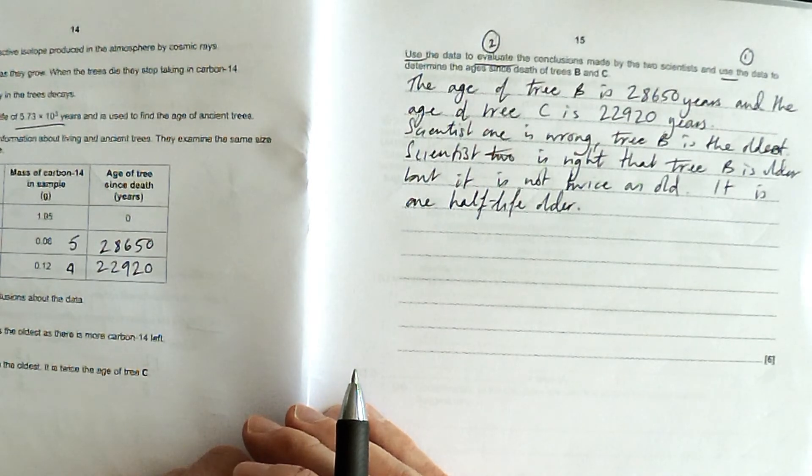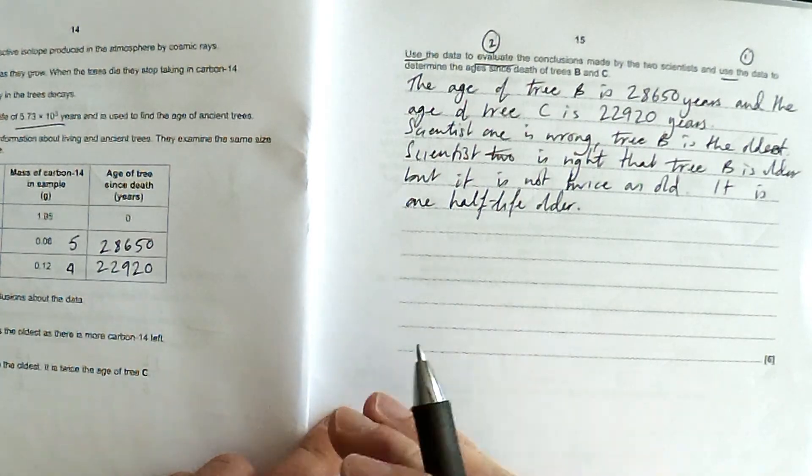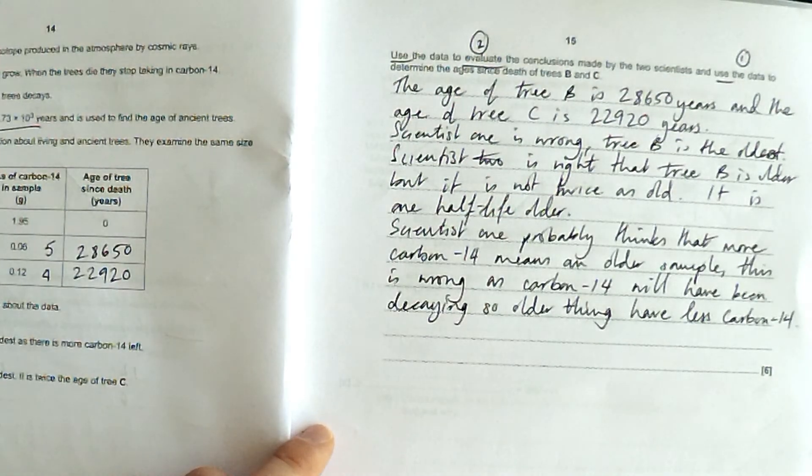It's not twice as old. It's one half-life older. Now why? What's the mix-up they've actually made? Let's think about that. What's the mix-up that scientist one has made? Well, scientist one has misunderstood that they clearly think that more carbon-14 means older. Which is actually carbon-14 would have been decaying. So there will be less carbon-14. And then why might the scientist two have been wrong? Well, they may have misunderstood the idea of a half-life being twice as old.